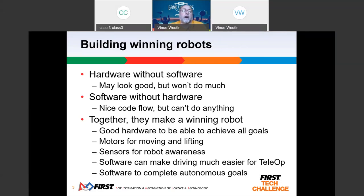Talking through how you go about this — you've got hardware and software. Without software, the robot just sits there; without hardware, you can have nice code flow but you're not actually going to do anything. Together you can have a winning robot. You've got motors to move things, lift things, pull things, and grab things. You've got sensors to give your robot awareness of orientation on the field, location on the field, and location of objects.